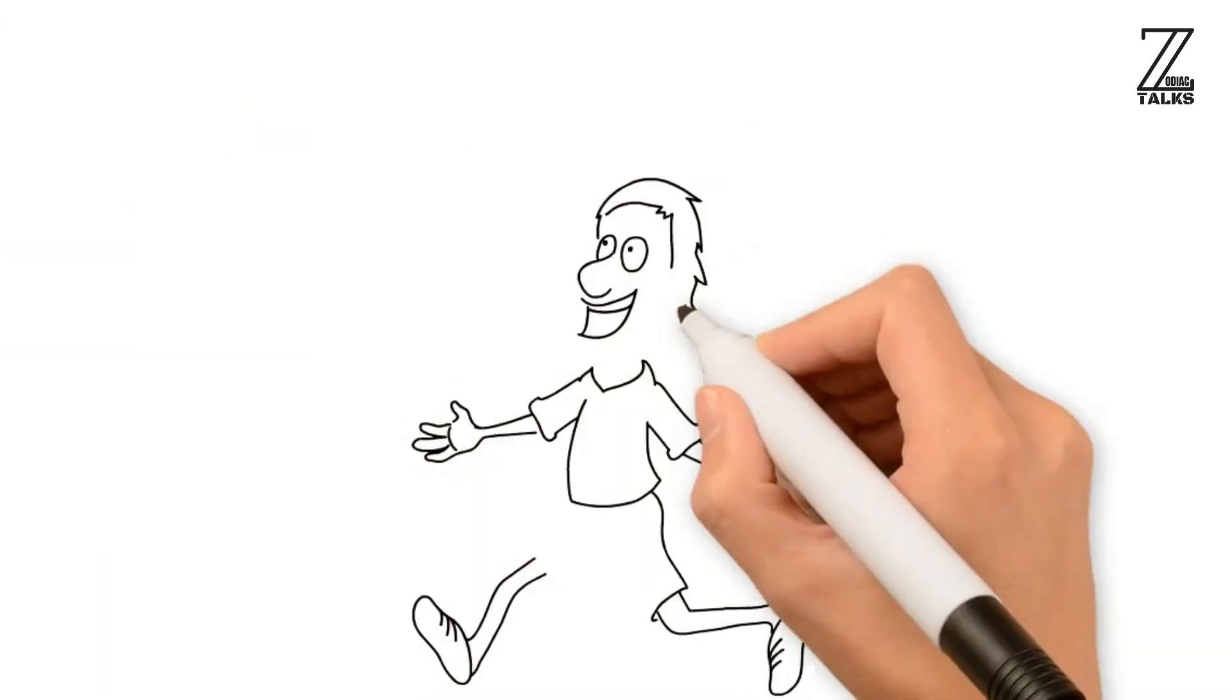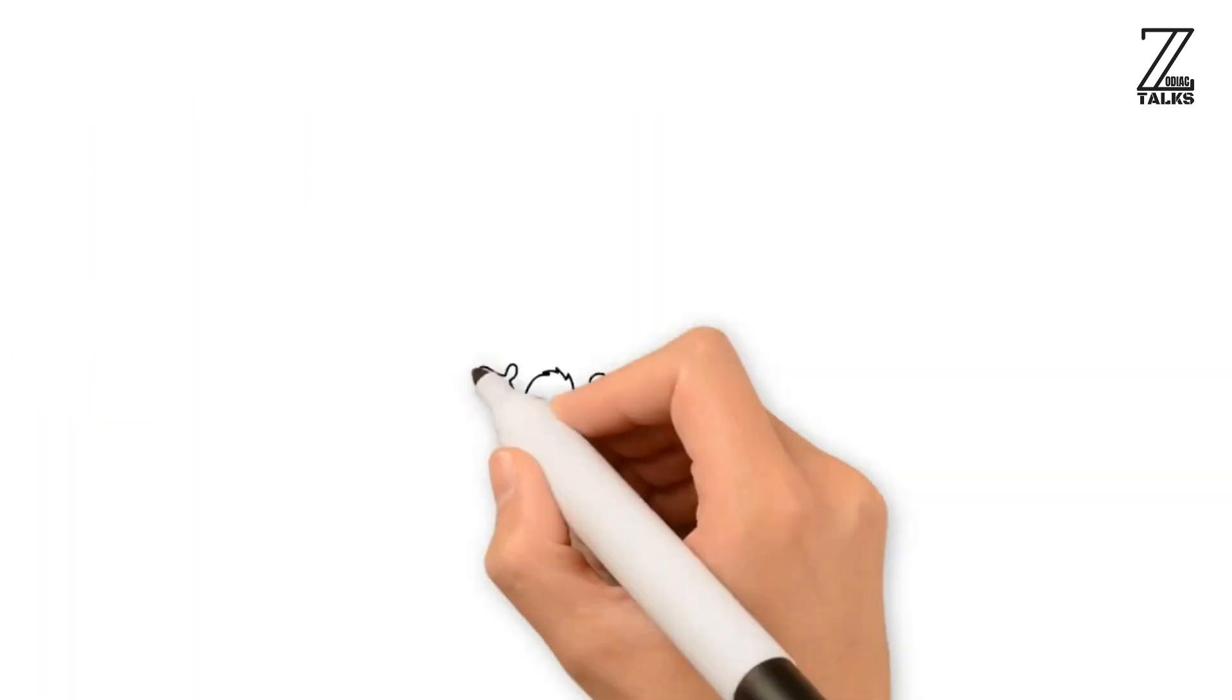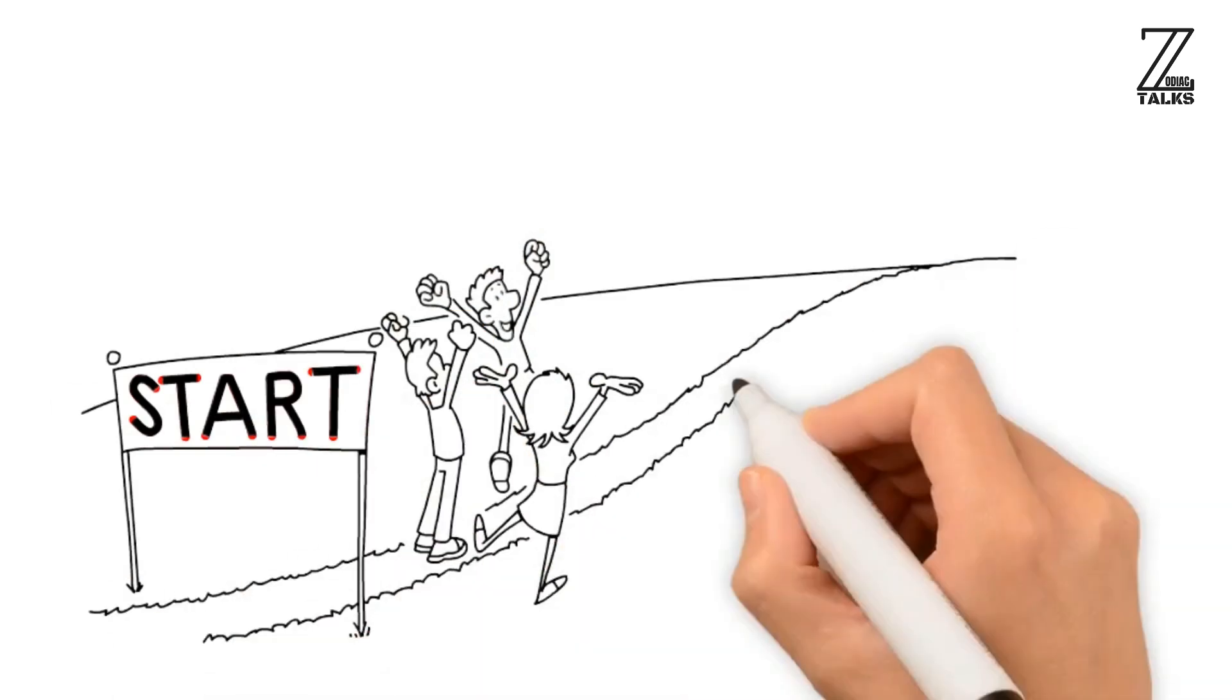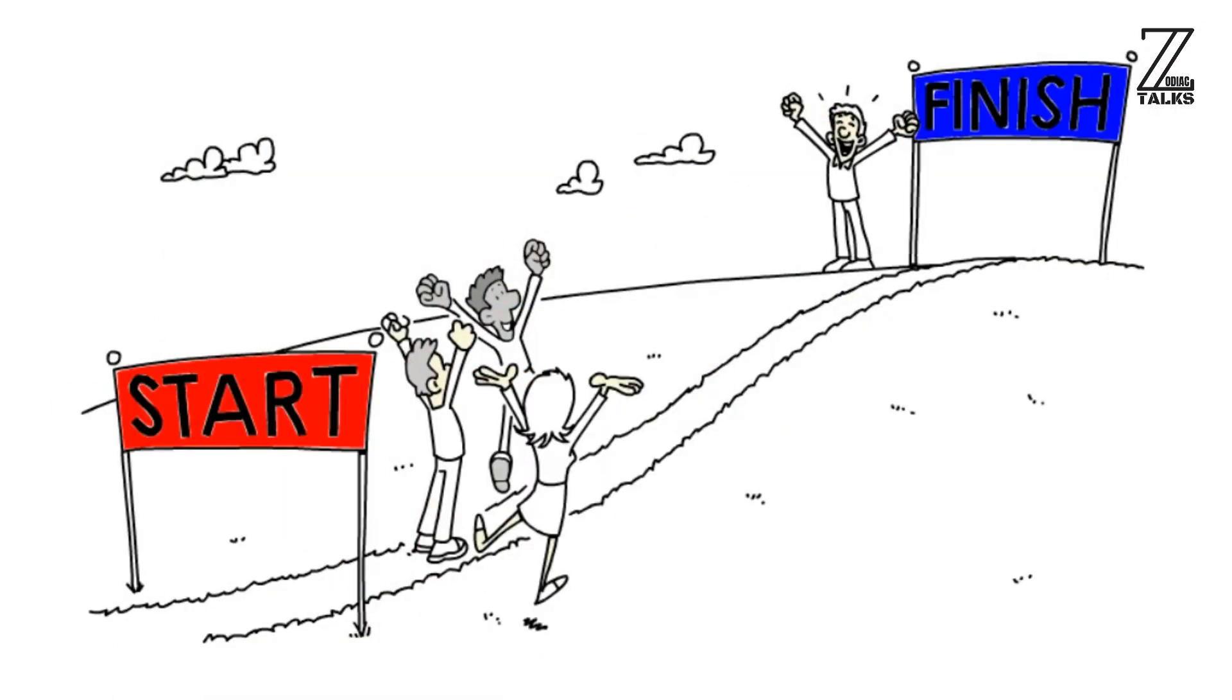Sagittarian people can be impatient at times and when they do, they don't like to wait. They would like to rush at times and want the task at hand to be done fast. They often make plans and would try hard to execute it.